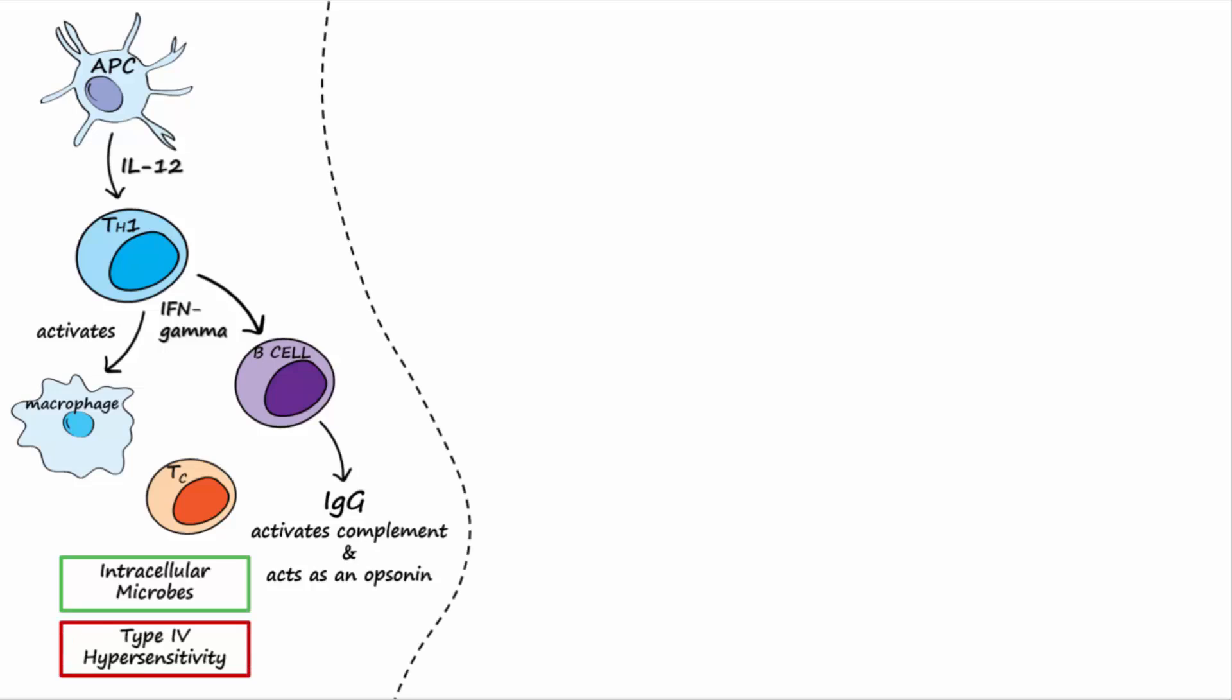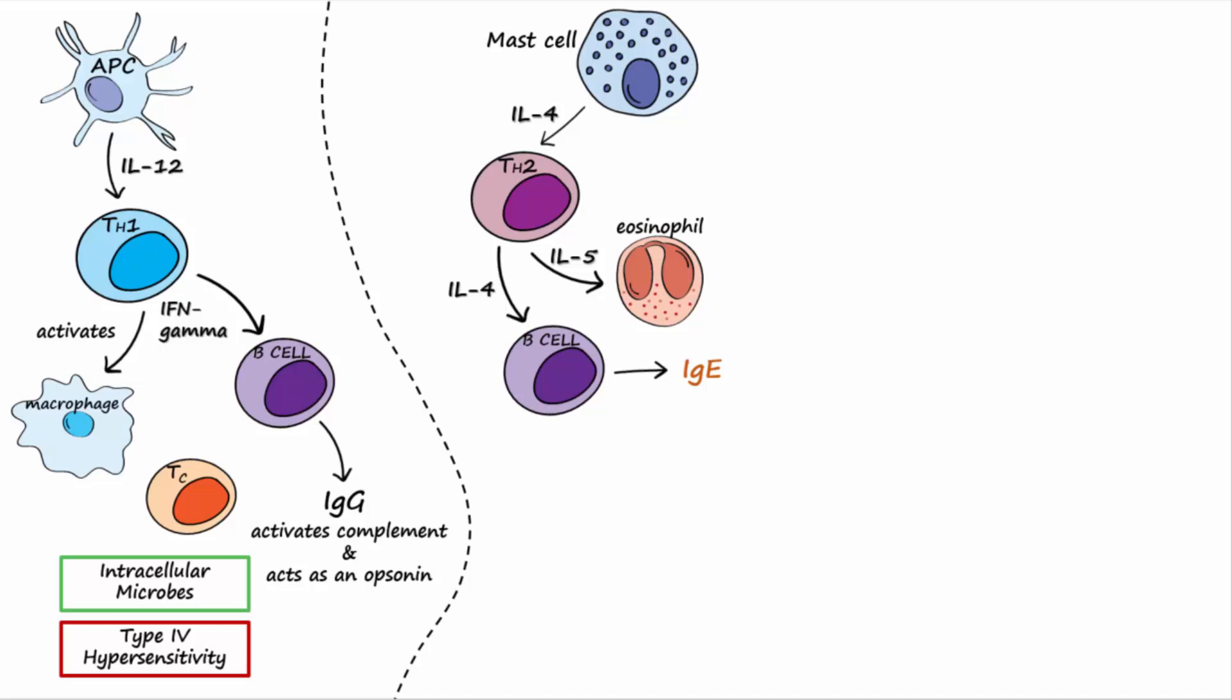The cytokine IL-4, released from mast cells, causes the naive T cell to mature into a helper T2 cell. The helper T2 cell then secretes IL-4 to stimulate B cells to secrete IgE antibodies, IL-5 to activate eosinophils, and IL-13 to stimulate mucosal epithelial cells to produce mucus.